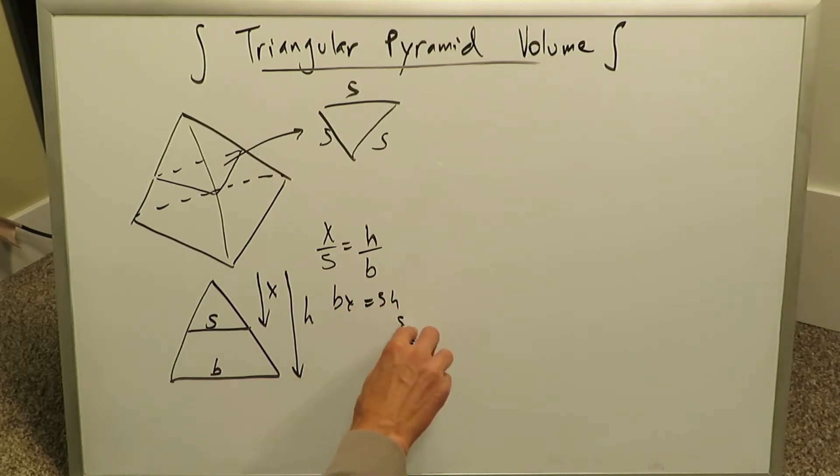BX is equal to SH, and S is equal to BX over H. Why are we going through the trouble of calculating what this S is?